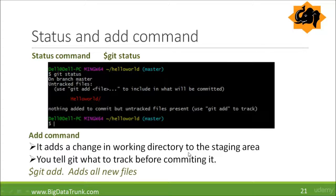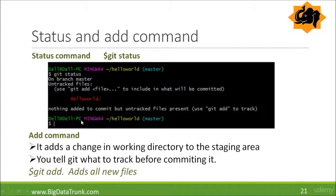The git add command adds a change in the working directory to the staging area — you tell git what to track before you commit. For this you use git add on the git bash. git add dot is a specific command which adds all new files; there are other variants like git add -a as well. You will open git bash, change to your local repository directory, run git status, and then git add dot will add all the untracked files to the staging area.